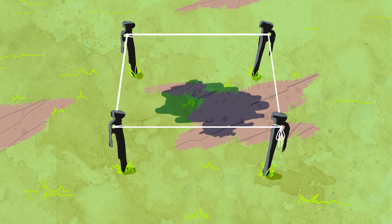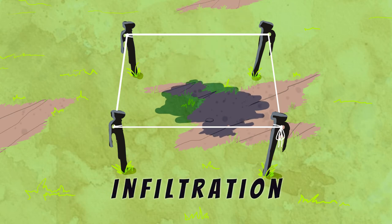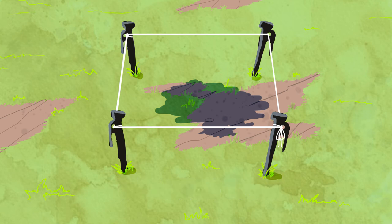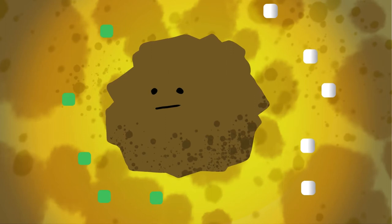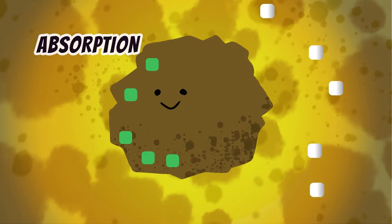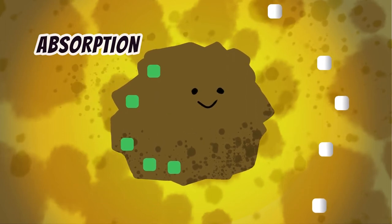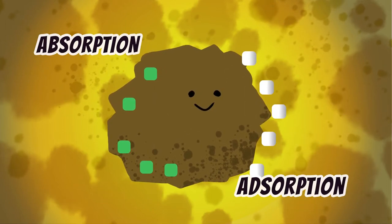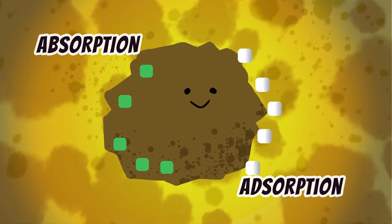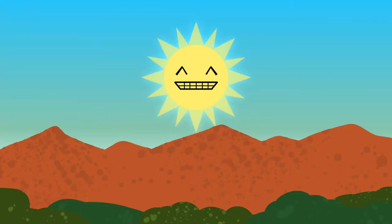The way this liquid enters and moves through the soil is called infiltration. As contaminants move through the soil, they undergo processes such as absorption and adsorption. Absorption: being incorporated into another substance. Adsorption: adhering to the surface of another substance.